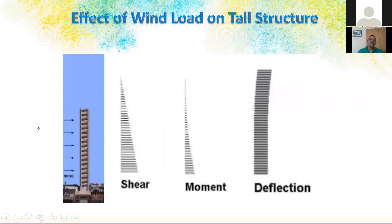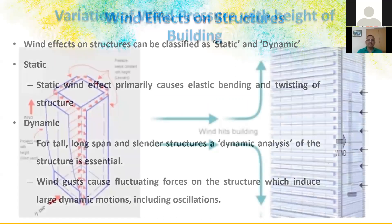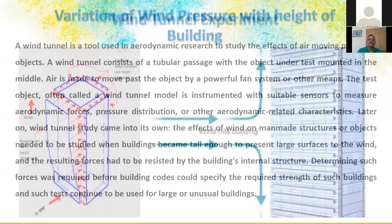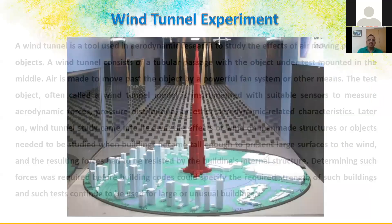Wind effects on structure — both static and dynamic — must be analyzed. Wind gusts cause fluctuating forces creating laminar and turbulent effects, which are very important. For normal structures wind pressure variation can be estimated easily, but as you go taller, wind forces increase drastically due to dynamic effects and reduced obstruction. Wind tunnel experiments are compulsory for high-rise buildings — at least beyond 30 floors. IS 875 coefficients alone are not sufficiently realistic for tall buildings.